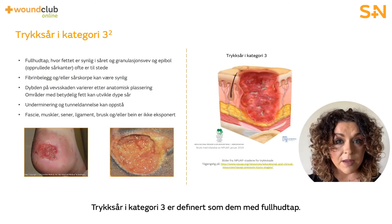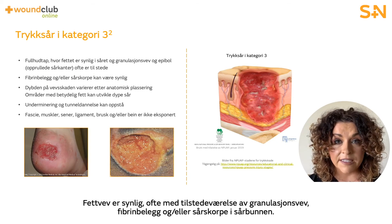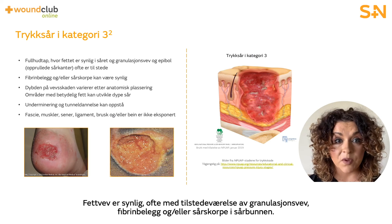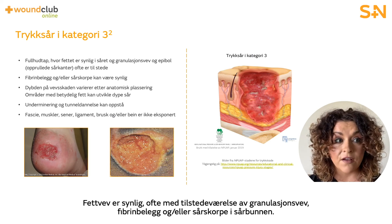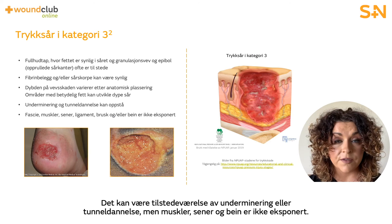Category 3 pressure ulcers are defined as those with full thickness loss of skin. Adipose or fatty tissue is visible, often with the presence of granulation, slough, and/or eschar in the wound bed. There may be the presence of undermining or tunnelling; however, muscle, tendon, or bone is not exposed.